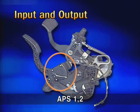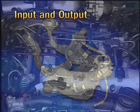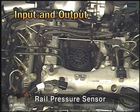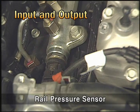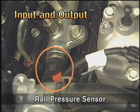APS 1 and 2 are used for detecting the driving intention of the driver. The rail pressure sensor is used for detecting the pressure of pressed fuel in the common rail.